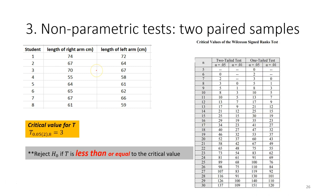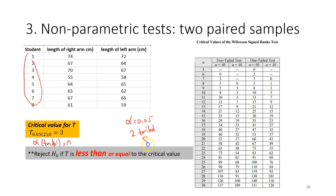Next, we set the criteria by referring to the Wilcoxon Signed-Rank test critical value table. We need the alpha, whether it is one-tail or two-tail, and the number of observations. In this case, alpha is 0.05, it is a two-tail test because we are testing for any significant difference, and n is 8. From the table, the critical value is 3.